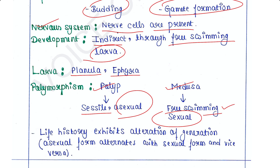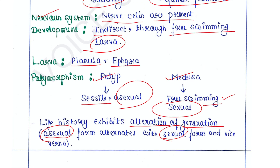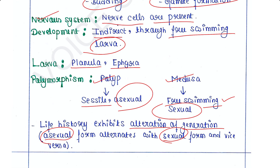Life history exhibits alternation of generation, meaning the asexual form alternates with the sexual form and vice versa — the sexual form alternates with the asexual form. This is all about today's lecture.